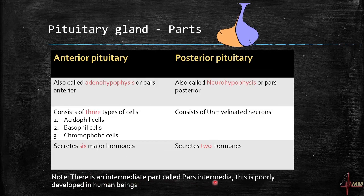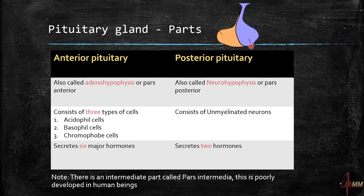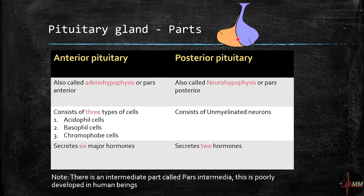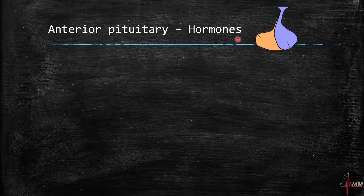There is also an intermediate part called the pars intermedia, which is poorly developed in human beings. Between the anterior and posterior pituitary you have this intermediate part, which is very poorly developed in humans.